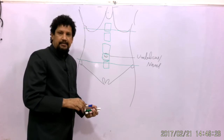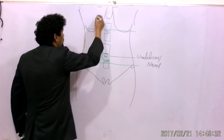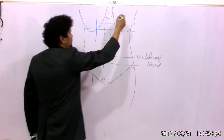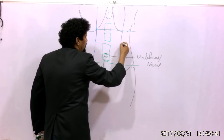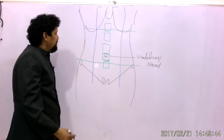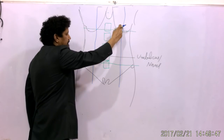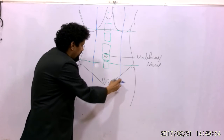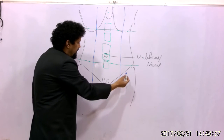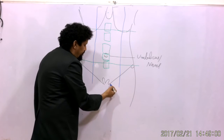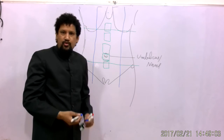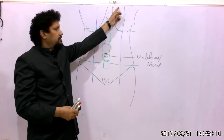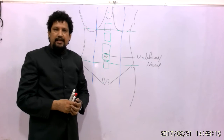Two vertical planes pass through the right and left mid-clavicular lines. Each also passes through the mid-inguinal point, the point between the anterior superior iliac spine and the pubic symphysis.